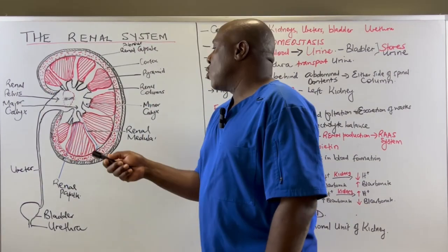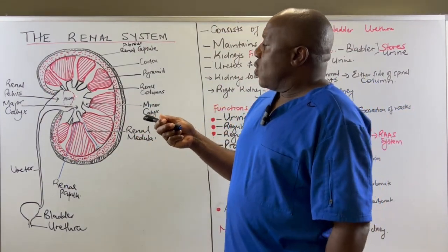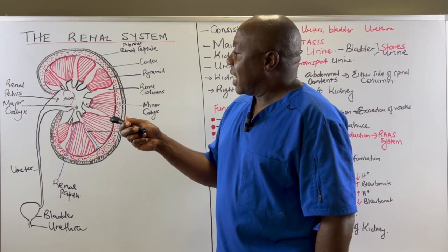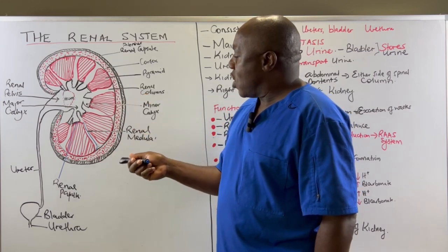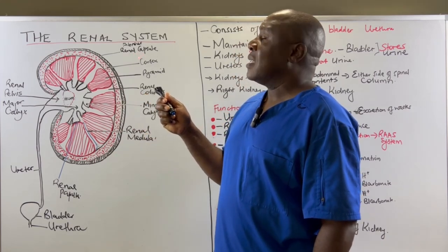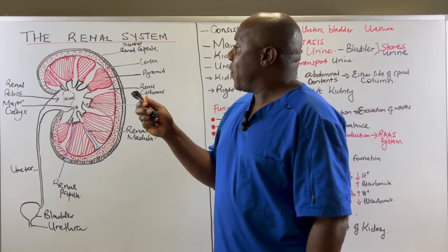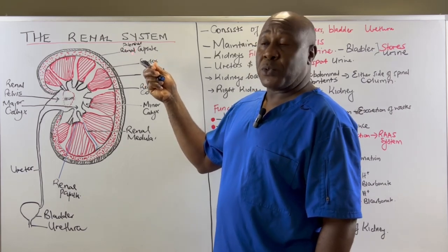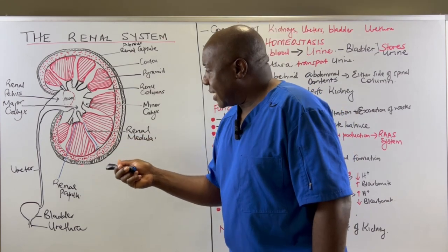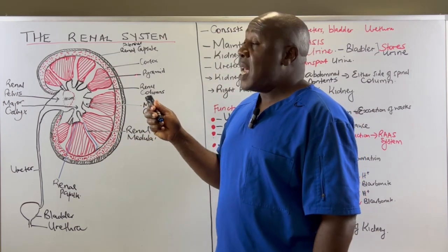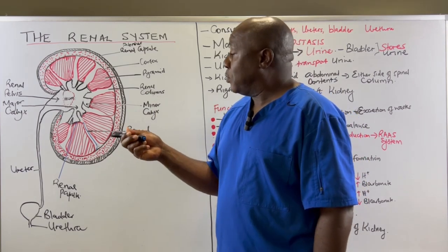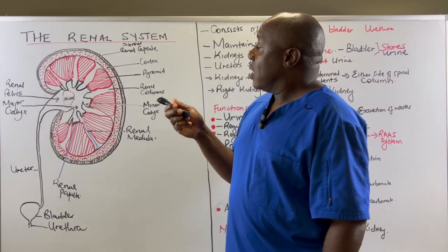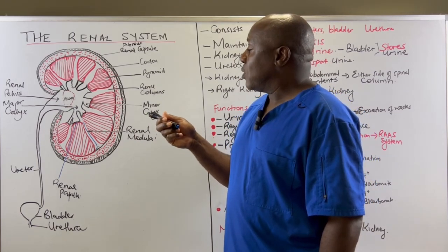So let us look at the anatomy of the kidney. The outside of the kidney is what we call the renal capsule — the kidney is enclosed in a capsule referred to as the renal capsule. This capsule is fibrous. The functions of the capsule are to protect the kidney and to help in shock absorption — it absorbs the shock which would otherwise damage this particular organ.